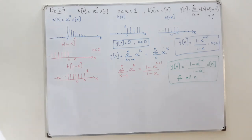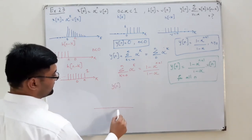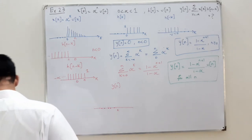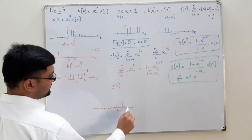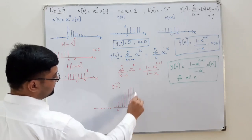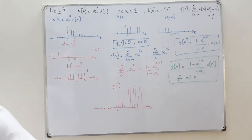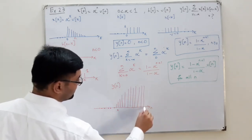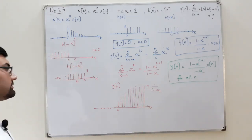This is the final answer. The book has also drawn the graph. You can draw it yourself. The function y(n) is 0 on the negative side, then increases as an increasing function, and eventually approaches the constant value of 1 over (1 minus alpha). That's all about example 2.3.